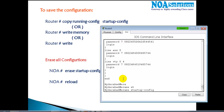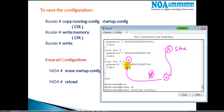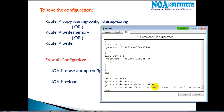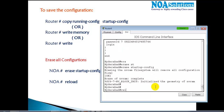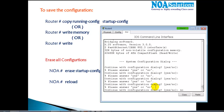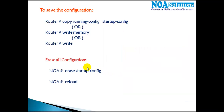To erase configurations — for example, if you have a spare router from the store room that you want to use in production or a branch office — you use 'erase startup-config'. It asks for confirmation; press Enter, then reload the router. The router will behave like a brand new device with no configurations, entering setup mode. Just answer 'no' to setup mode and it will come up as a fresh router.